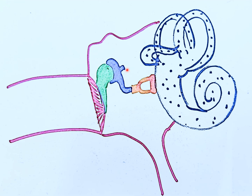In the middle ear we have the ossicles — malleus, incus, and stapes. What these ossicles do is amplify the sound. Whatever sound falls onto the tympanic membrane will be amplified and sent to the cochlea, so that the pressure created at the tympanic membrane is magnified at the oval window, moving the fluid so the sensory cells within the cochlea can be stimulated.